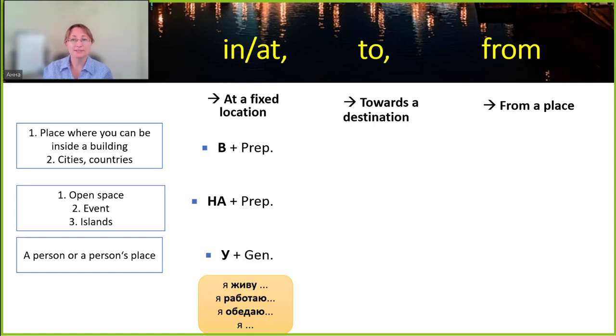Now let's switch to the context of moving somewhere either towards a destination or from a specific place. Here we'll still keep these same three categories in mind. If we are moving towards a destination that we're going to go inside some building or we're going to a city or a country, we will still use the preposition В but the case switches to the accusative case. Similarly, with open space events and islands, we will still use the preposition НА but we'll switch the case from prepositional to accusative.